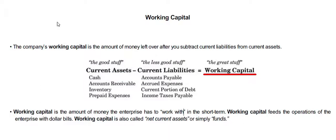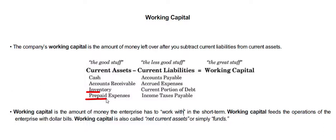For this example, we are considering four current assets: cash, accounts receivable, inventory, and prepaid expense. There might be many more.